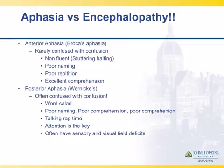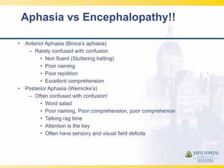We have to be really careful about not confusing aphasia with encephalopathy, and this happens a fair amount. Anterior types of aphasias, or Broca's aphasias, are rarely confused with confusion. They are usually a non-fluent, stuttering or halting type of aphasia. People have a problem getting a word out — they trip up over words and syllables. They can't name things at all. They can't write, although they can read. They have poor repetition but really excellent comprehension.